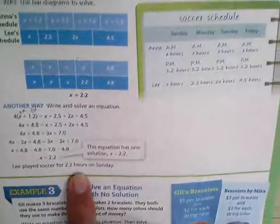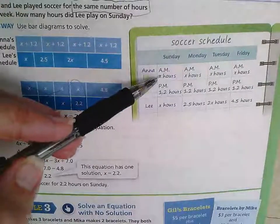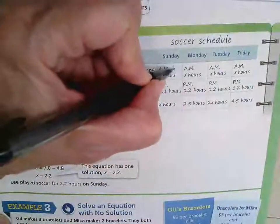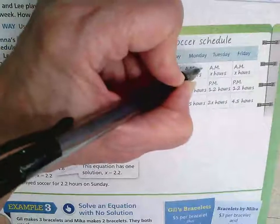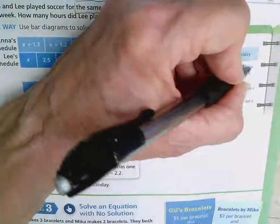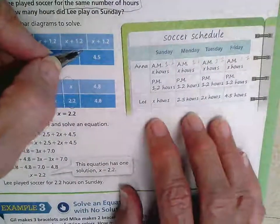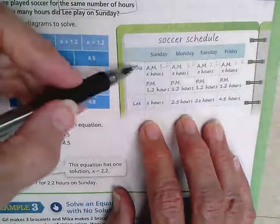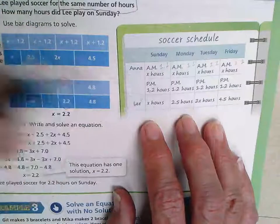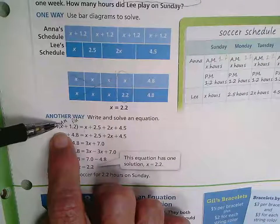And a way we could check this, of course, is by putting 2.2 back in every place there's an X, and adding those values up for Anna, and seeing if we get the exact same amount that Lee has. In other words, we're going to put 2.2 in right here for X,